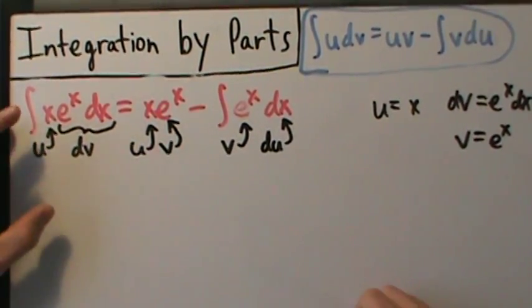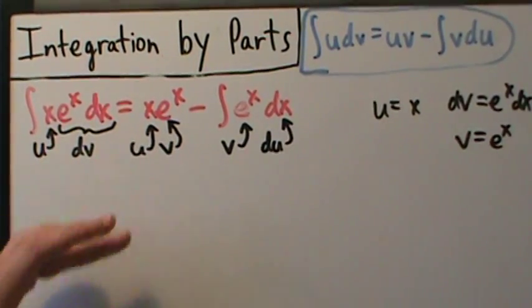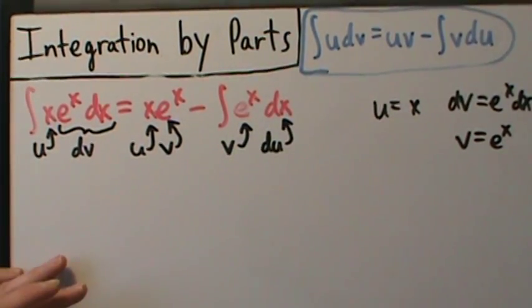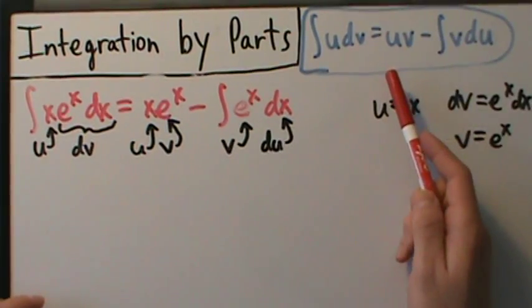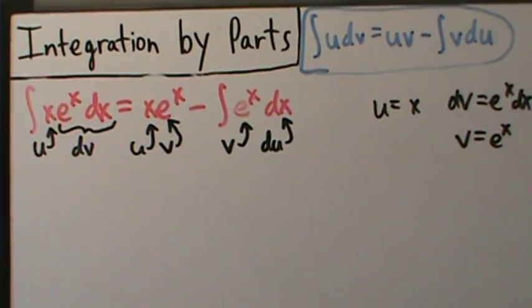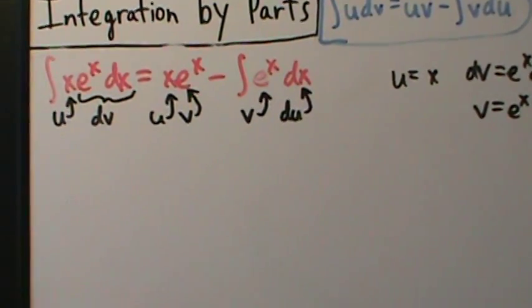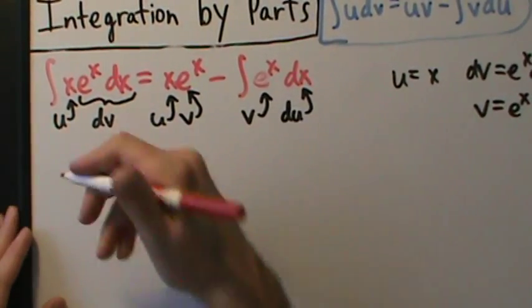Because with this specific example it might look like, well, it's simple enough that it works, but it's actually true in general if you use this formula. If you have v plus a constant instead of just v, it'll still cancel out. So let's go ahead and work through the details here.